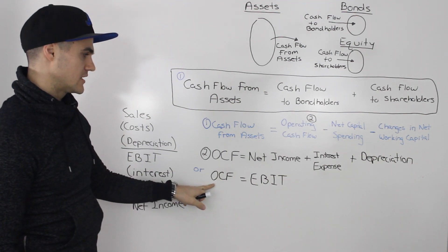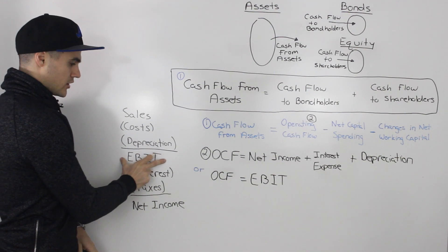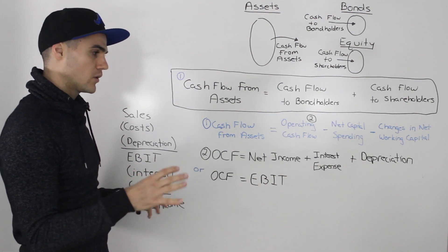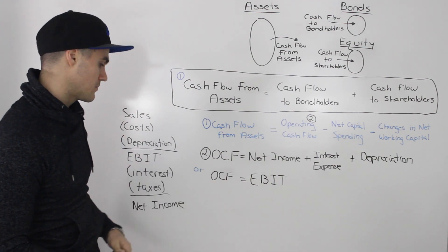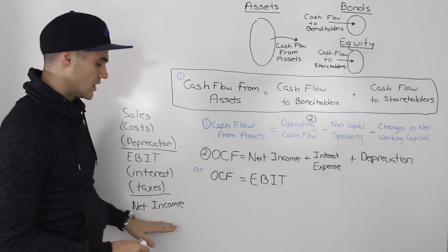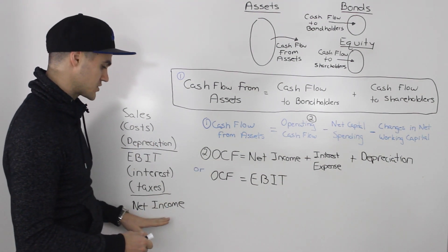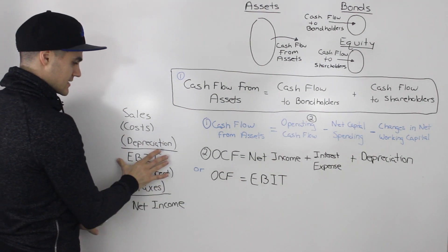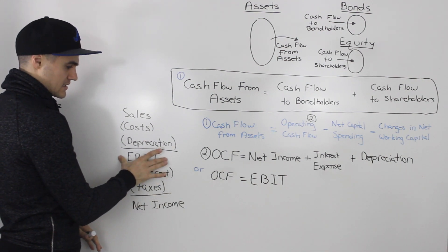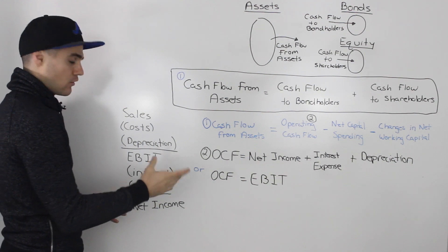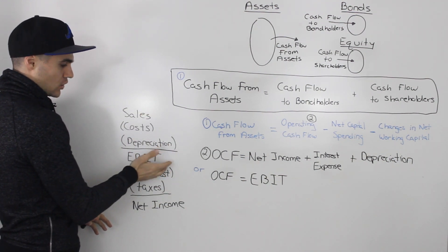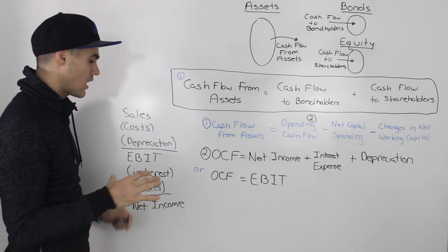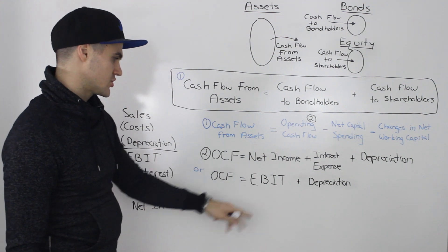Another common way to get operating cash flow is to start at earnings before interest and taxes (EBIT) rather than net income. Starting with EBIT is actually more common and what you'll see most in this course. Going up from EBIT, we encounter depreciation again — since it's a non-cash expense and not an operating cash flow, we add it back. Costs and sales above that are operating cash flows, so we leave them.